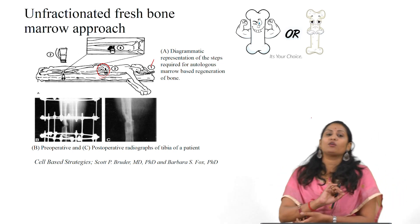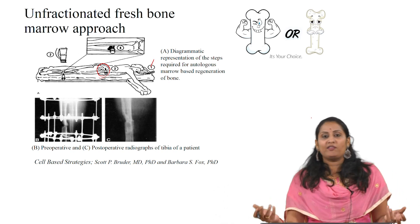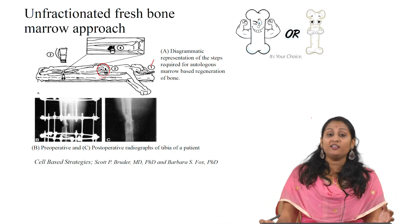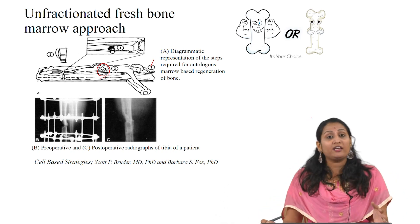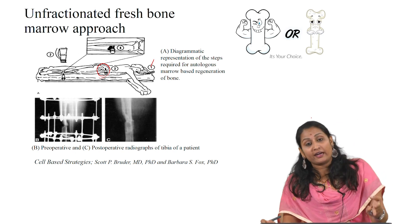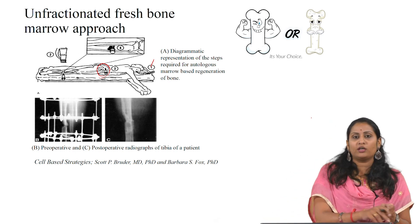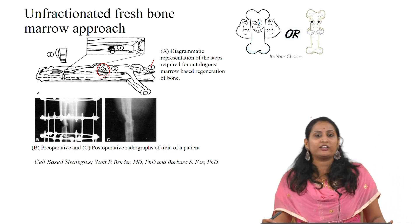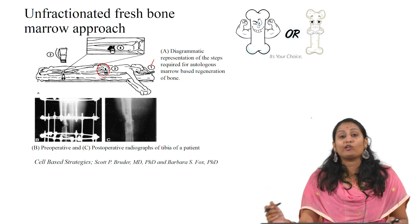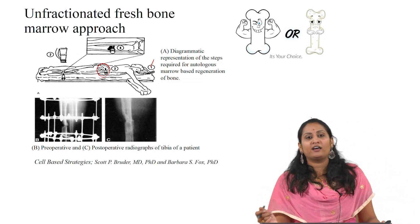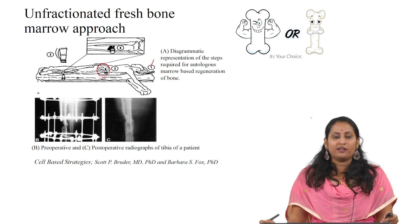The disadvantages of this approach are limited availability — it is autologous — and it increases pain and requires two surgeries: one to remove the bone marrow and one to inject into the defect site. This makes it time-consuming and painful.